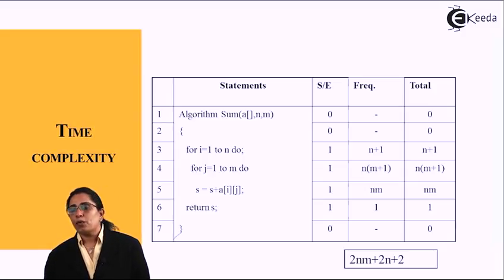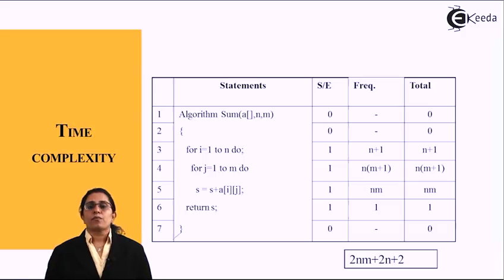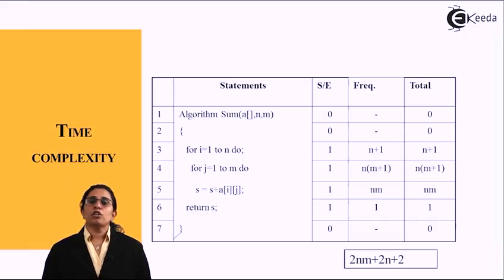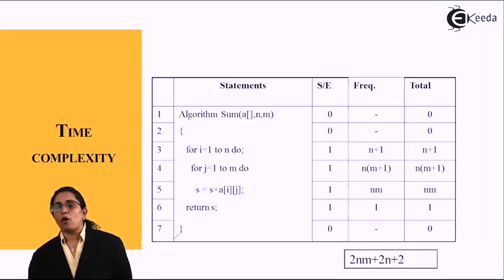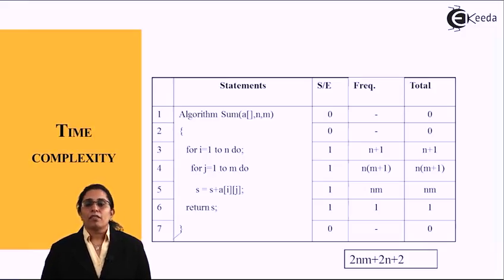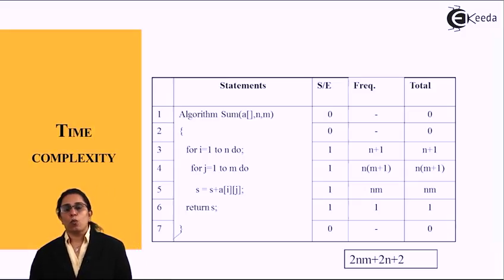The second one is an opening brace, so for the same, the step count and the frequency and the total amount of time complexity is 0. For the two for loops, for i equals 1 to n, the frequency is n plus 1, so the total time complexity is n plus 1. For j equals 1 to m, the time complexity and the frequency is n multiplied by m plus 1.